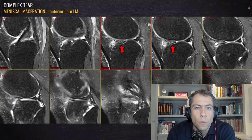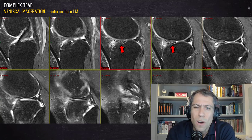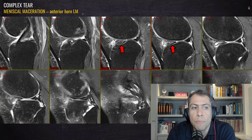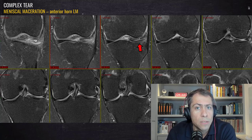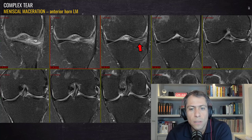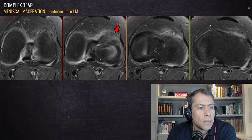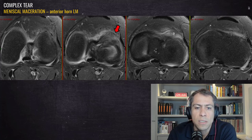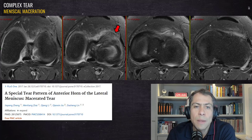This is an example of meniscal maceration at the anterior horn of the lateral meniscus — a very common place for meniscal maceration. Another common region is the posterior horn of the medial meniscus, because most of the time it's a degenerative change. On the coronal plane we can see the meniscal maceration extending to the transition with the meniscal body. On the axial plane we can also see this region of meniscal maceration, along with a parameniscal cyst and parameniscal fat edema around this area.